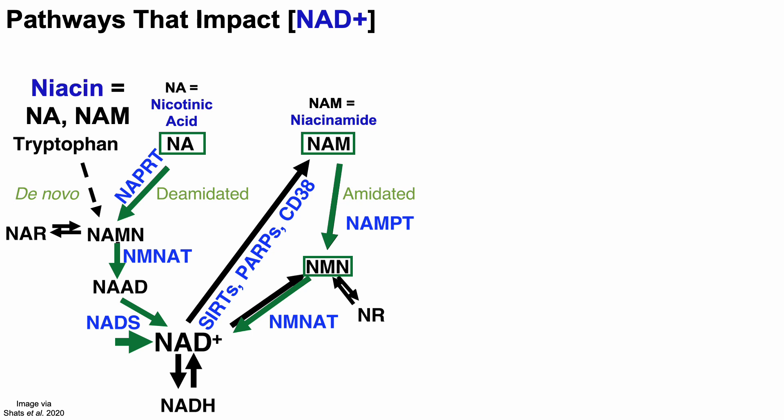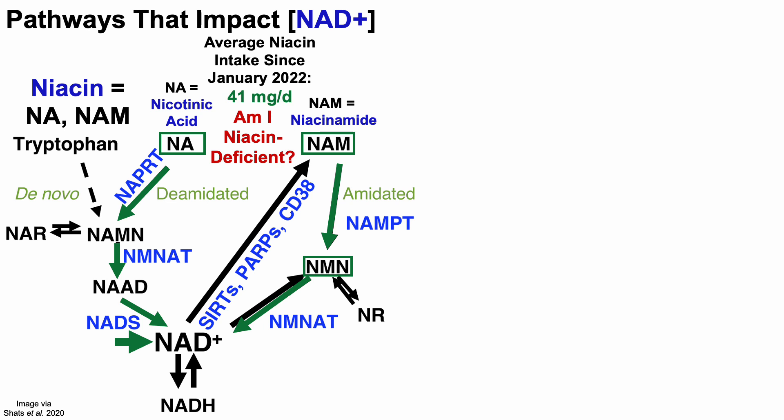That raises the question: am I niacin deficient? I track my diet every day — I've weighed all my food since 2015. Since January 2022, my average daily niacin intake is 41 milligrams per day, which is two-and-a-half-fold higher than the RDA of 16 milligrams per day, and it's been like that for at least the past 13 months. So am I niacin deficient? The answer is no — which is one reason why I'm surprised that my NAD levels are relatively low.